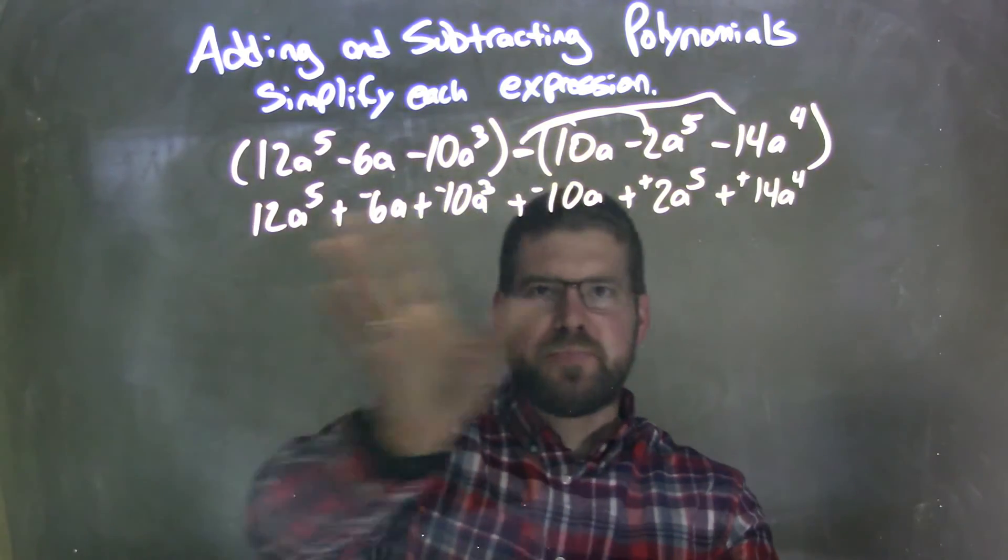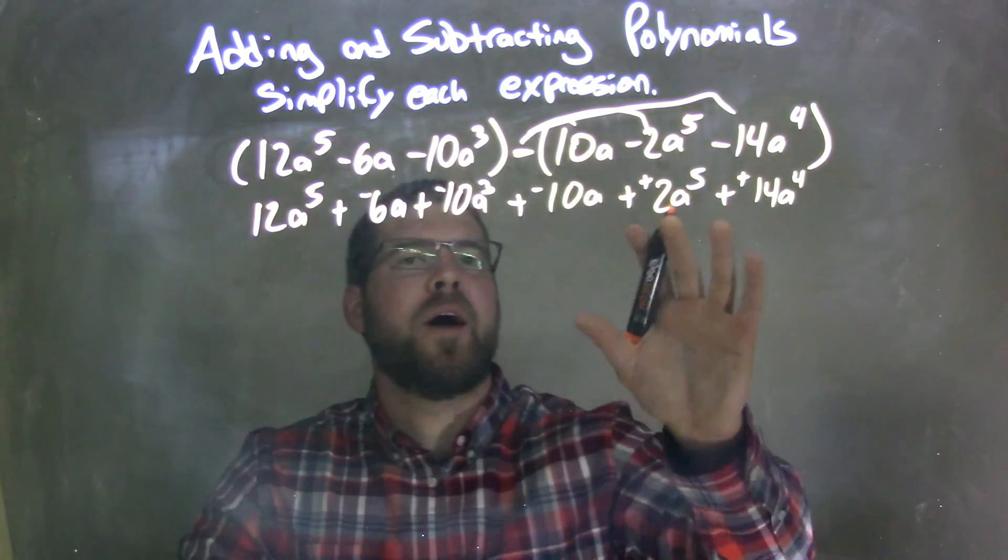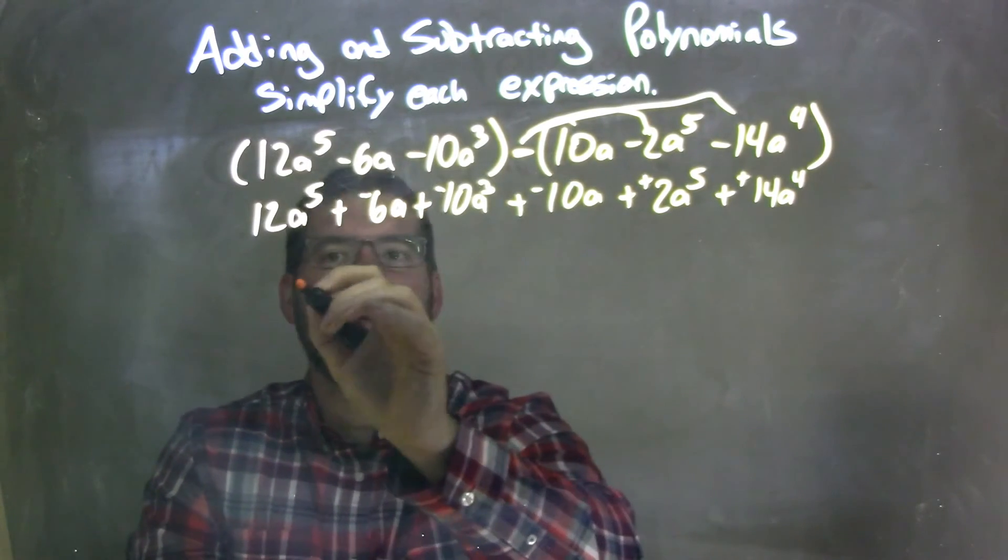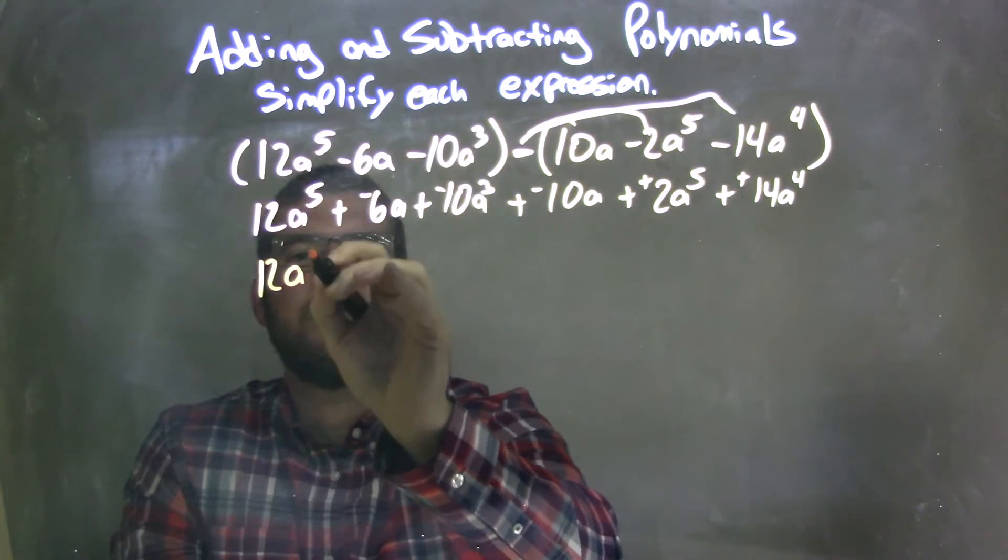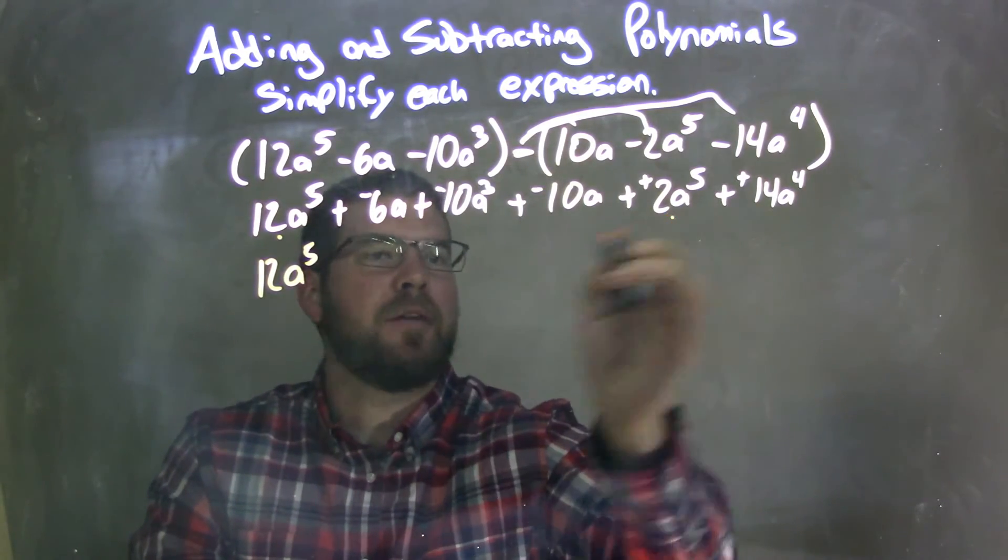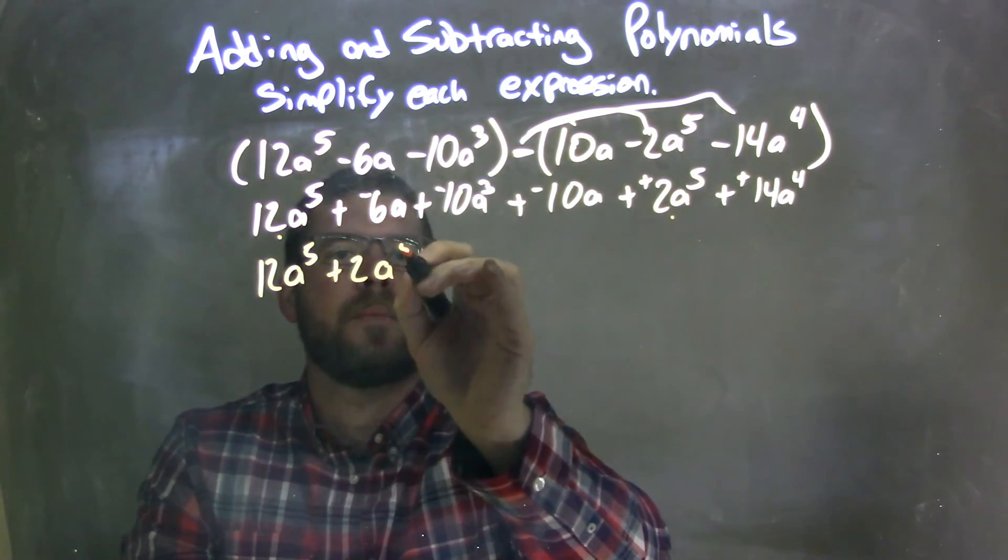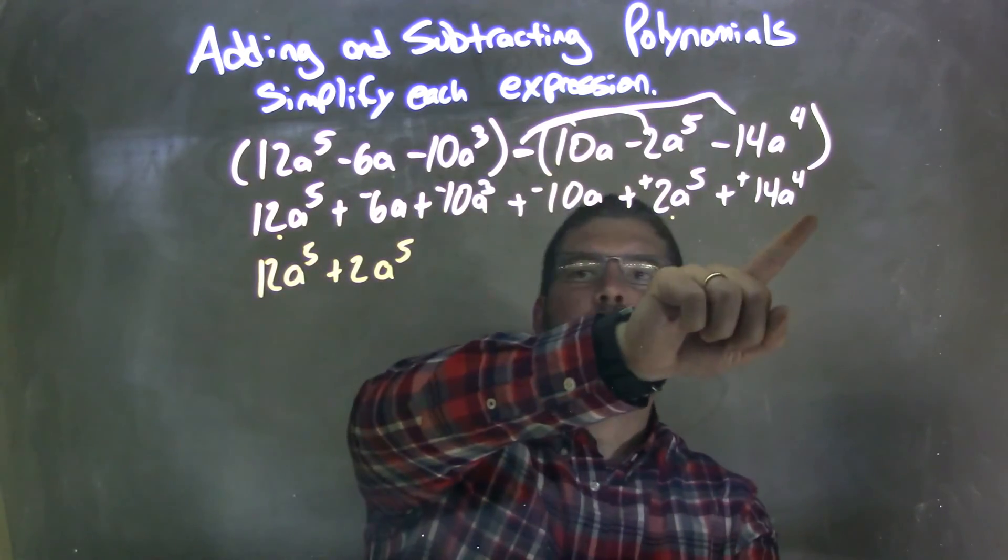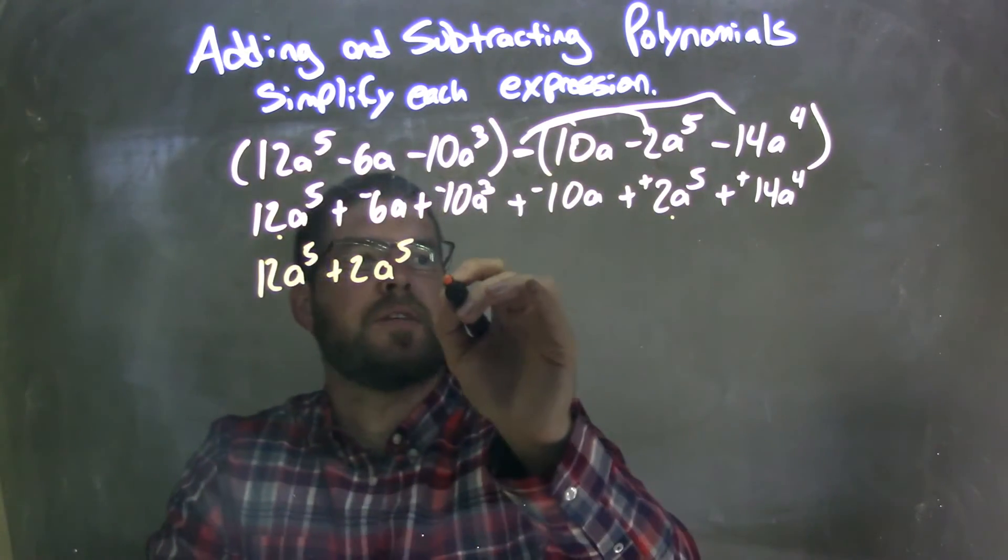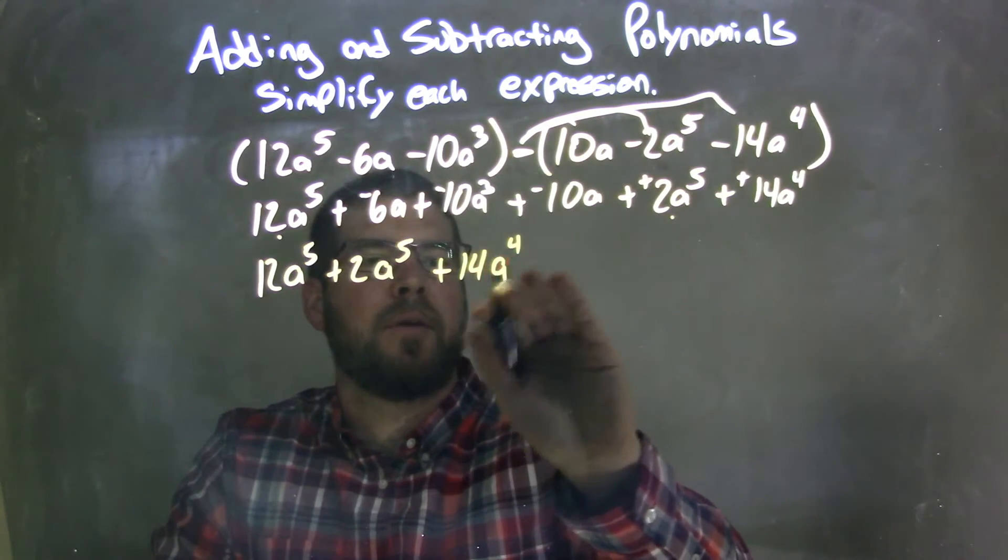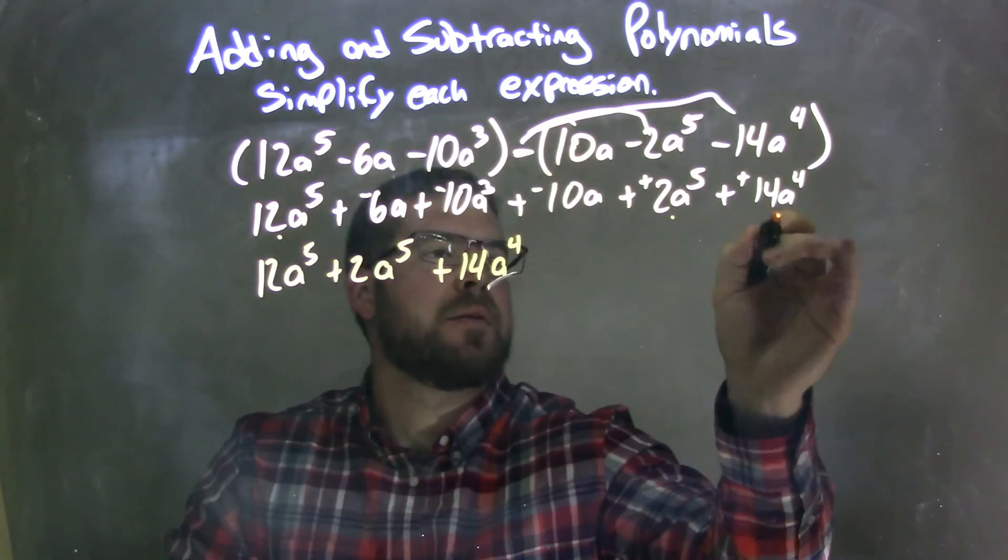So now I have all six terms here. I'm going to rewrite them, highest degree first. Highest degree I see is to the 5th power, so 12a to the 5th, and I'll put a little dot saying that I've brought that one down. Then this one here, plus 2a to the 5th. I don't see any more to the 5th. So now the next highest degree is to the 4th power, plus 14a to the 4th. That's an a, not a 9.